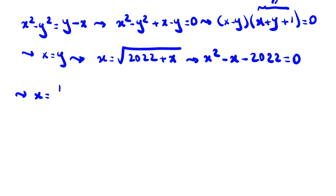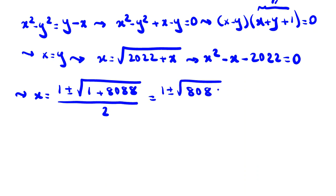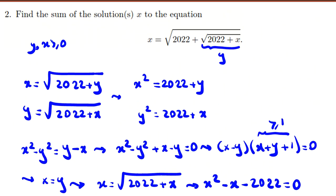Using the quadratic formula, x equals negative b plus or minus the square root of b squared minus 4ac, which is 8089, all over 2a. So x equals 1 plus or minus the square root of 8089 over 2.